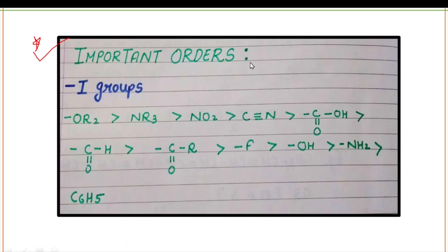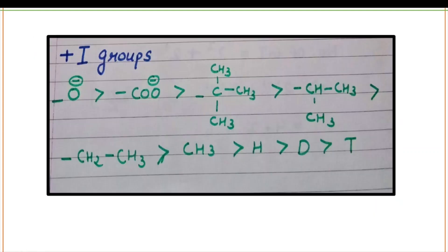This is the very important order of minus I groups. All these functional groups are regarded as minus I groups and you have to learn these orders. They will help you solve questions related to organic chemistry — stability orders of carbocations, carbanions, acidic orders, and stability of carbonyl compounds. You have to remember two orders: number one for minus I groups and number two for plus I groups.